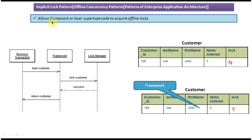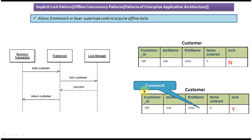If you read the explanation again — 'allows framework or layer supertype code to acquire offline locks' — you will now understand it. The framework is responsible for locking and unlocking the particular row.